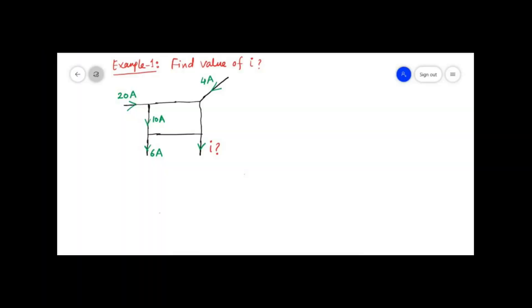Dear students, we are going to see a very basic example based on Kirchhoff's Current Law (KCL) — that is, the algebraic sum of currents meeting at a junction or node in any electric circuit is zero, or incoming current is equal to outgoing current.